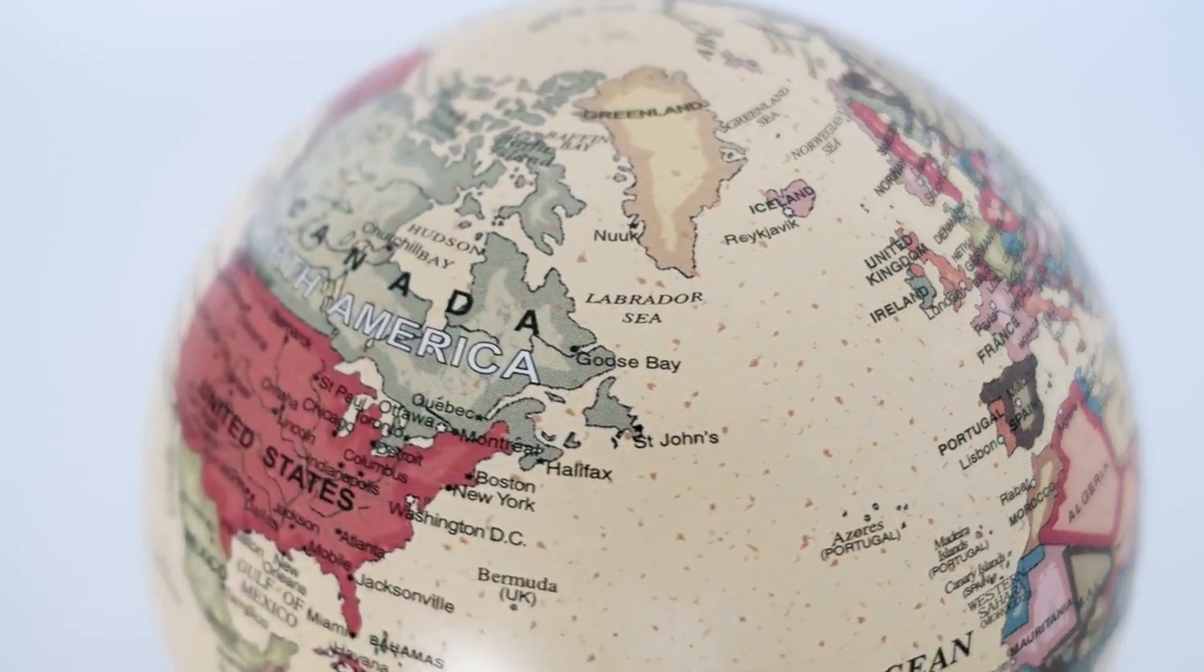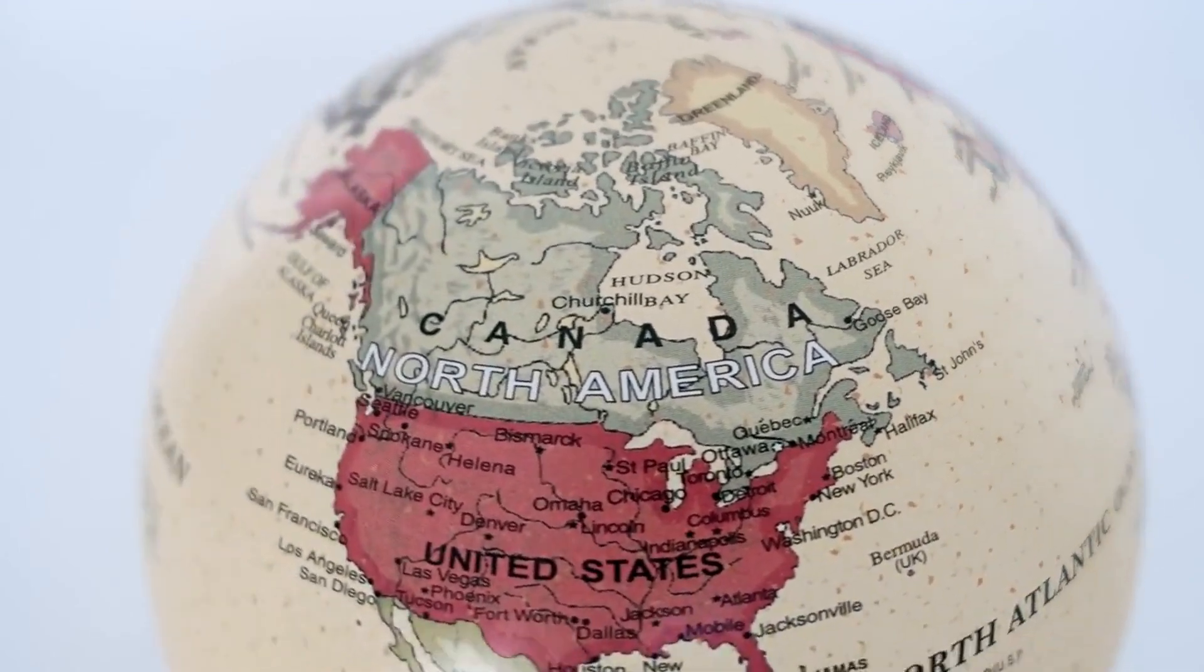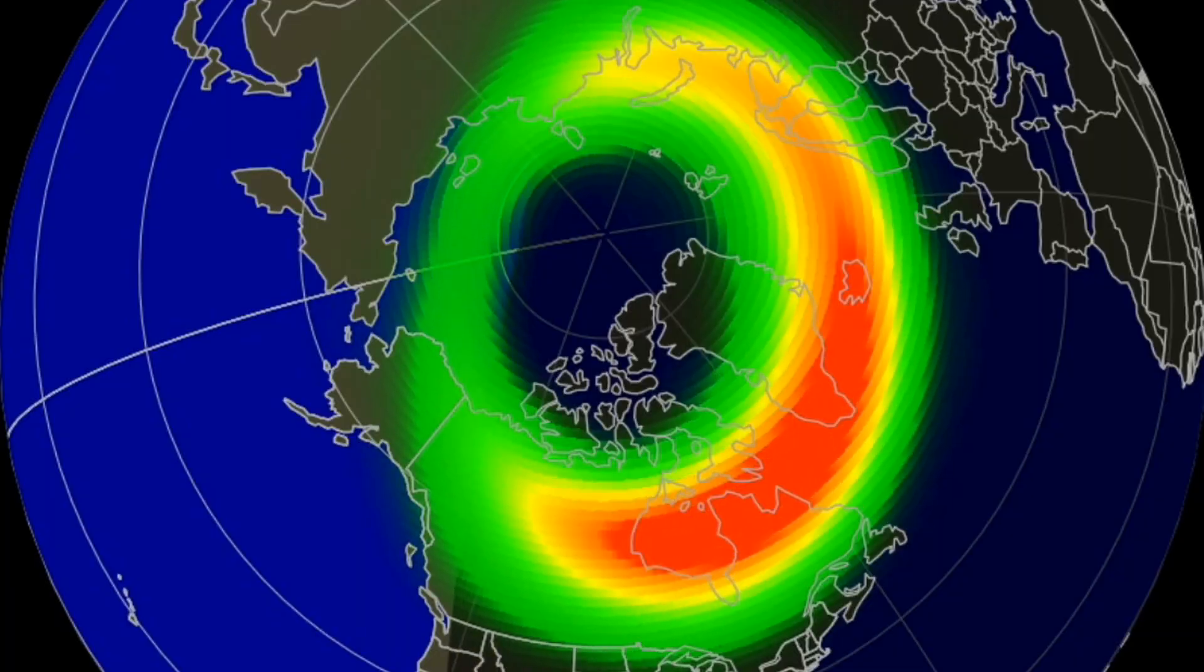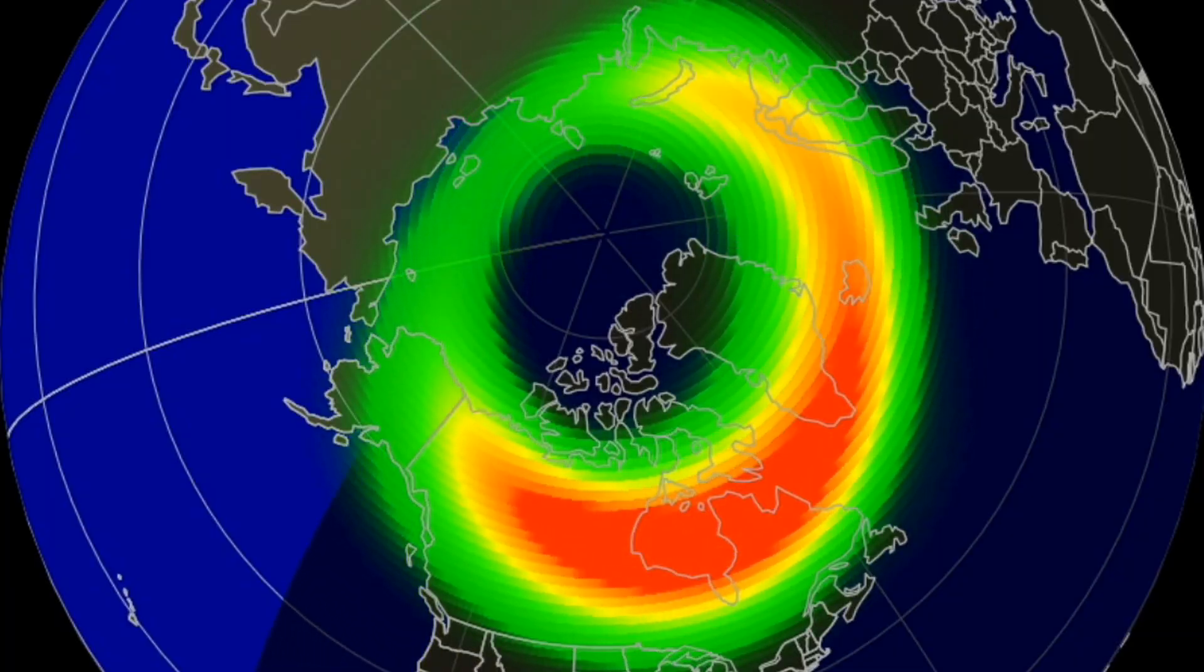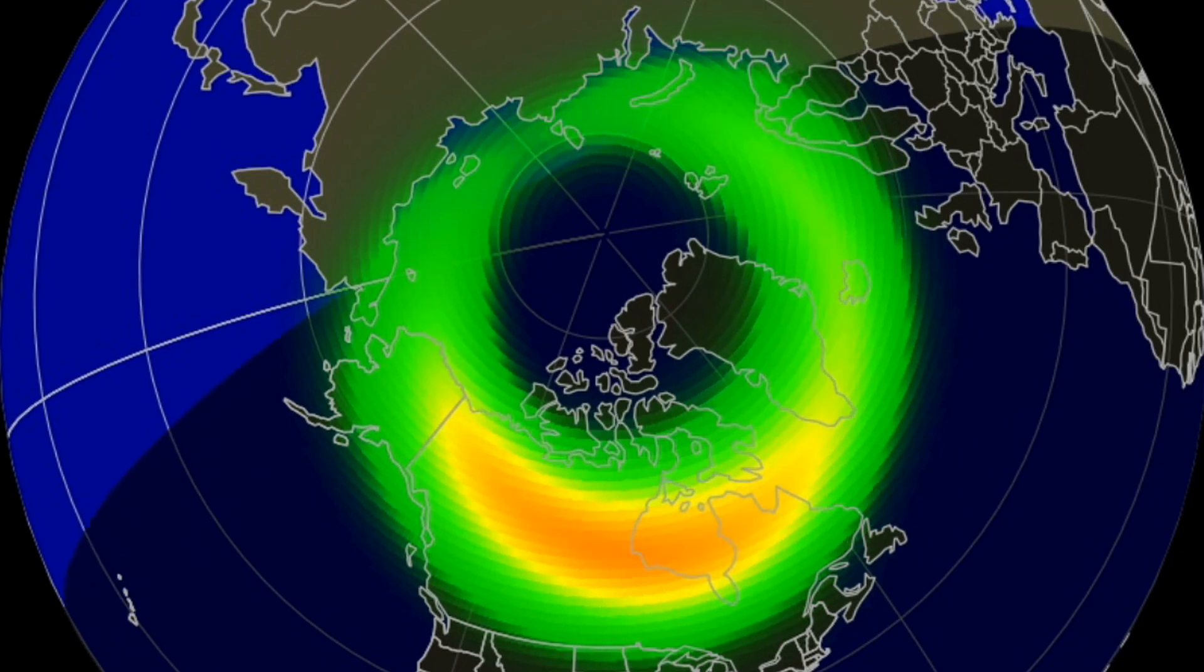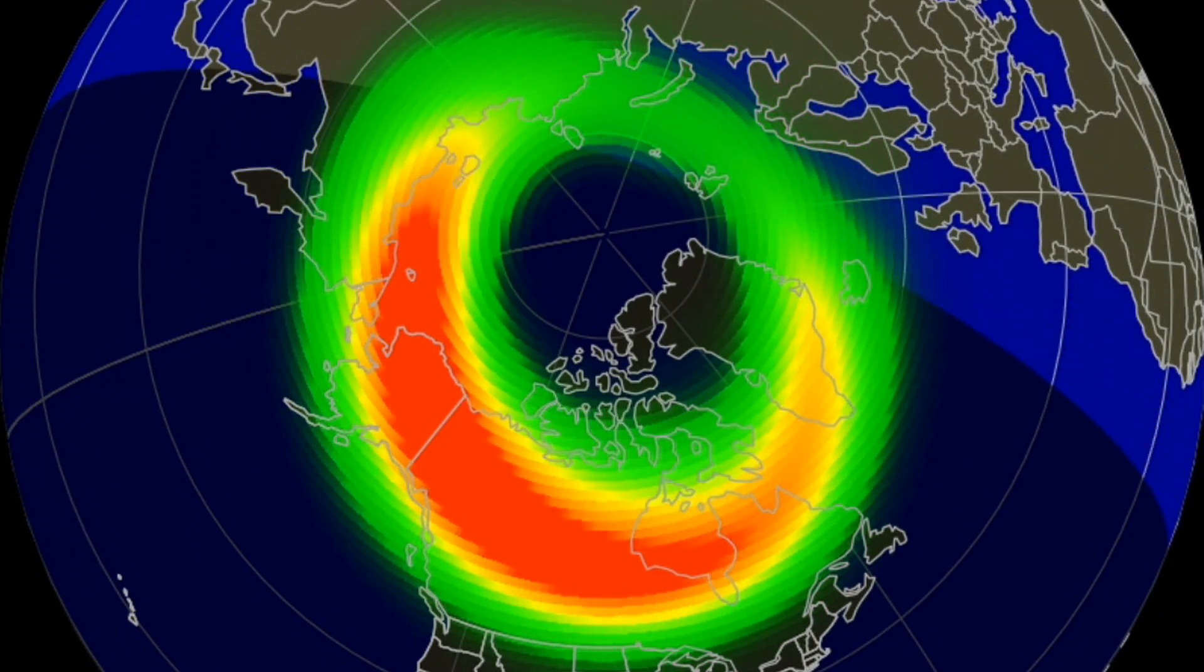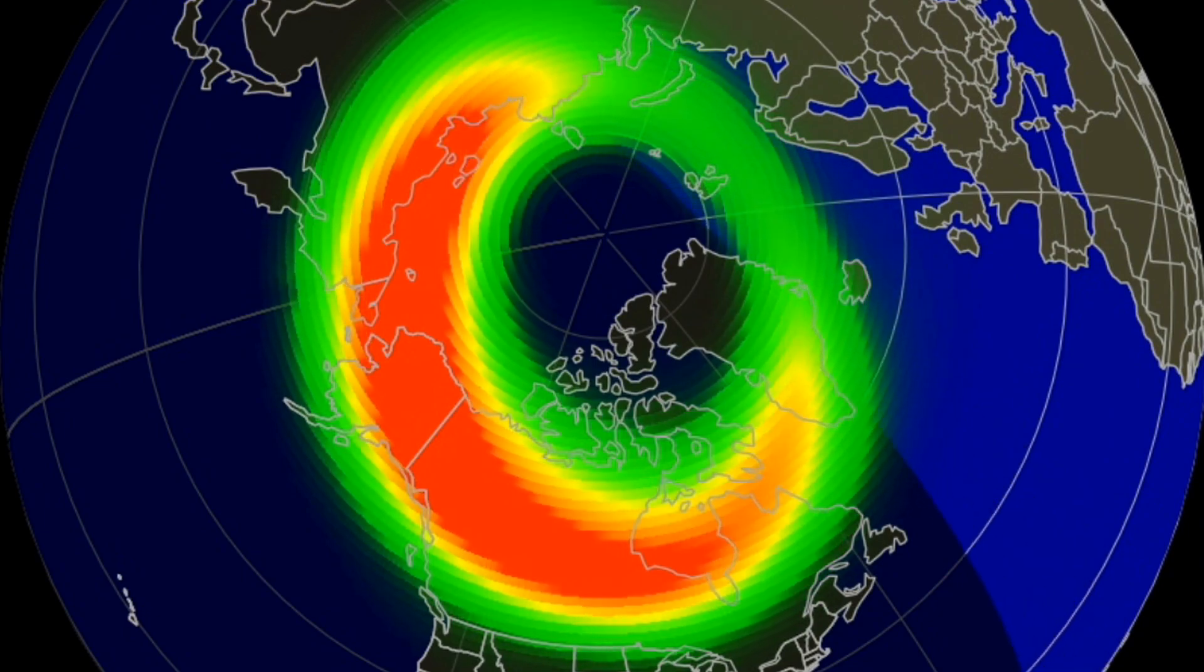The Northern Lights are always present in the polar regions, but they tend to be more active during the equinoxes. Other factors that can influence aurora activity include solar activity, the strength of the solar wind, and the location of the auroral oval, which is the region where the Northern Lights are most visible.